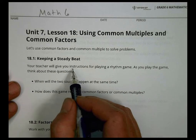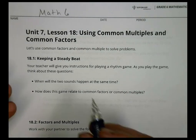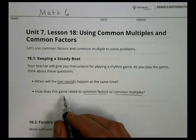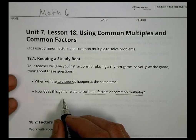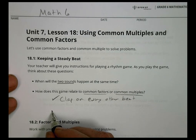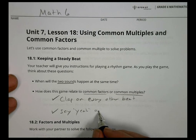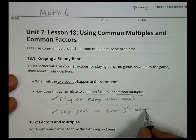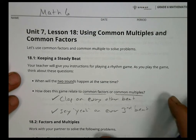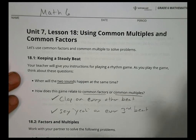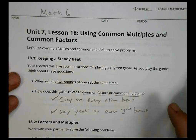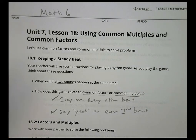The first activity is called 'Keeping and Setting a Beat.' Your teacher is going to give you instructions for playing a rhythm game. As you play, think about: when do two sounds happen at the same time, and how does it relate to common factors and common multiples? One person claps on every other beat, and another person says 'yeah' on every third beat.